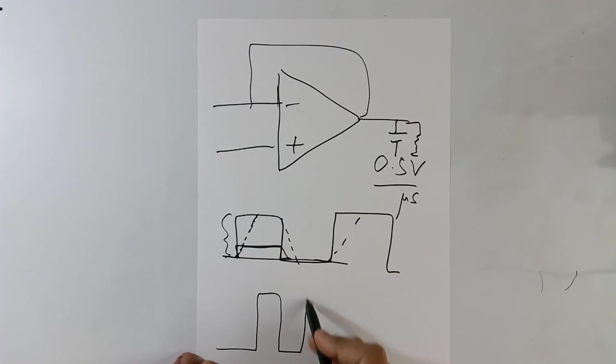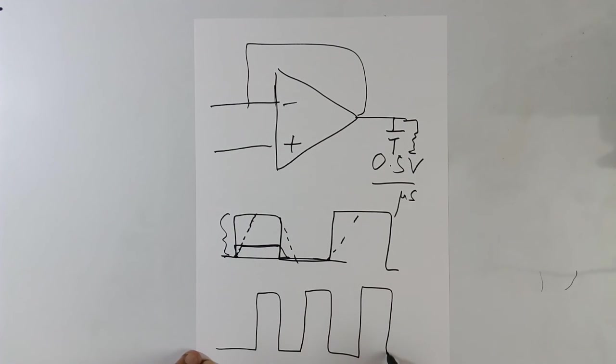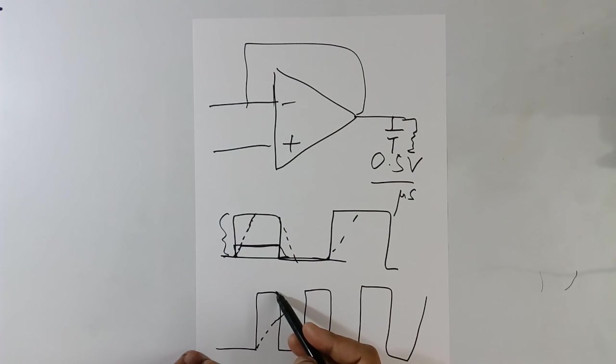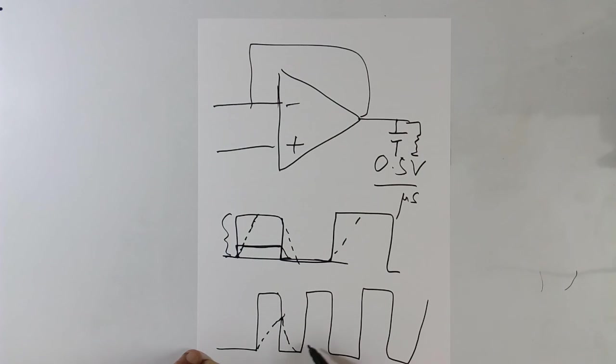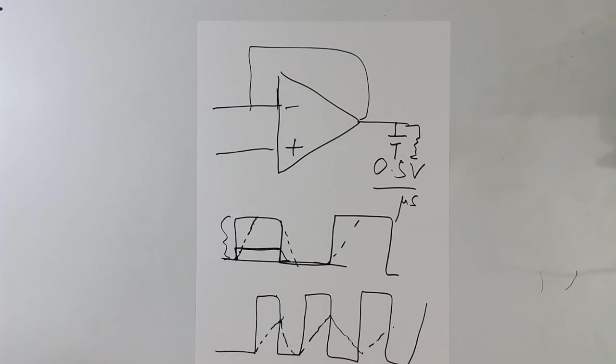Suppose frequency is very high, say like this. Because of slew rate voltage will start from here. It will not reach here. It will stop here and voltage come down. It will go like this. You will get something like triangular wave shape.